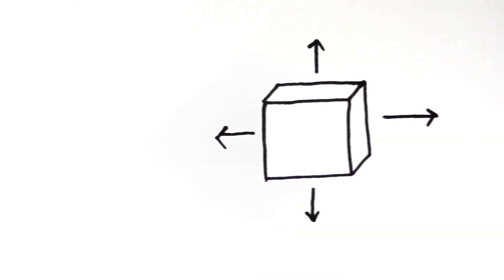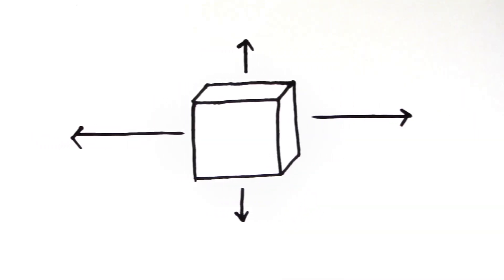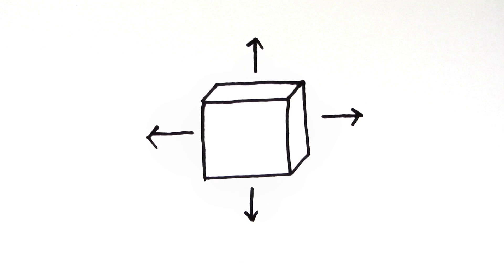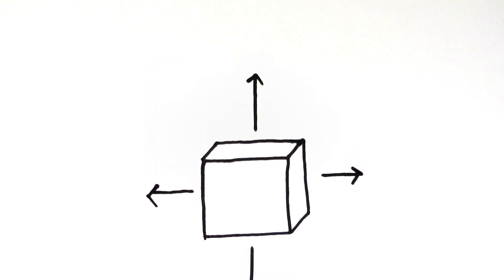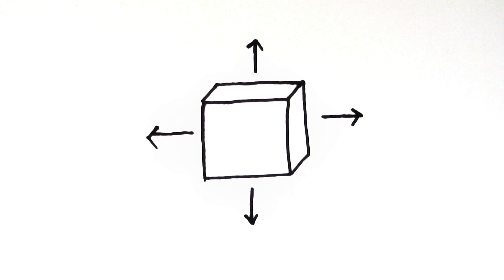An object may have several different forces acting on it, which can have different strengths and directions. But they can be added together to give the resultant force. This is the single force that has the same effect on the object as all the individual forces acting together.